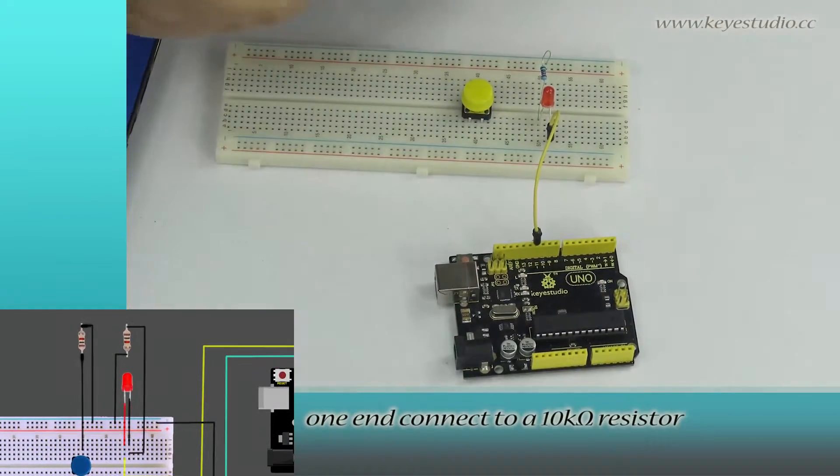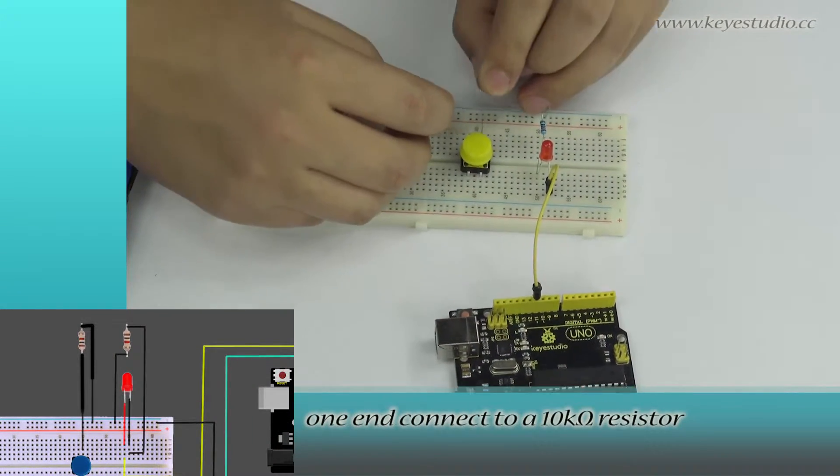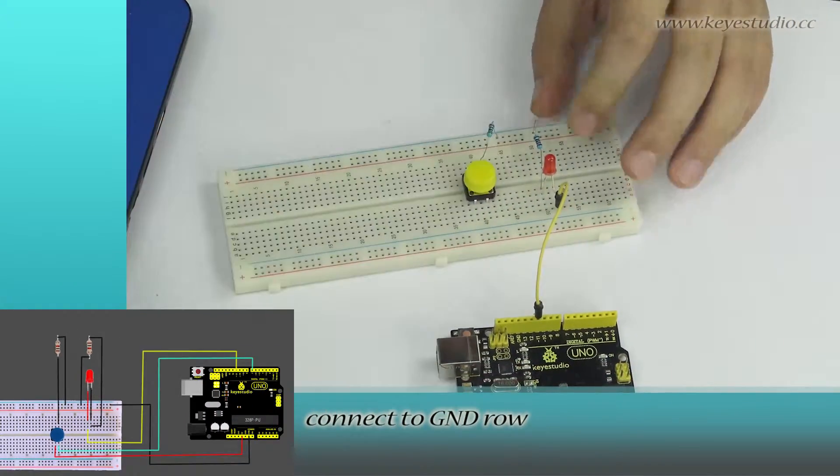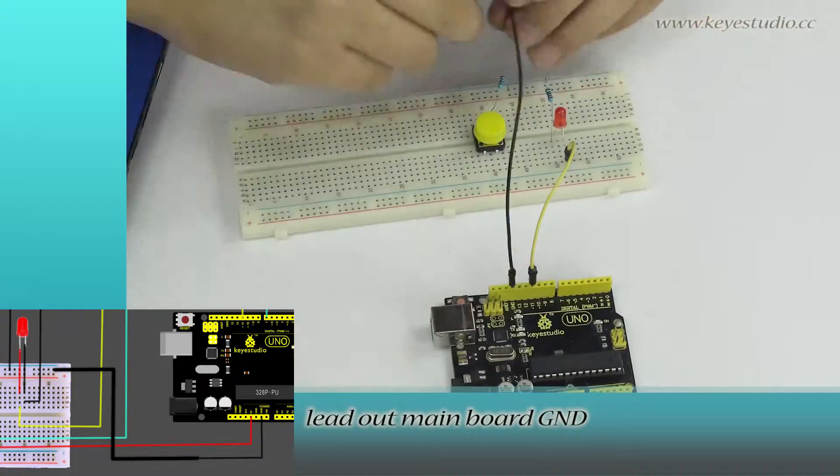For the button, one end connects to a 10K Ohm resistor. The other end of the resistor connects to GND row of the mainboard GND.